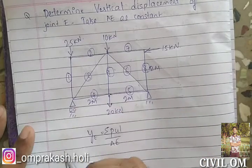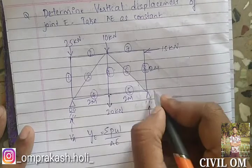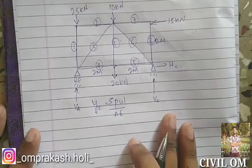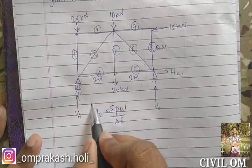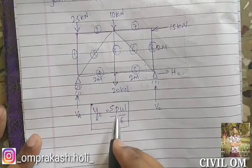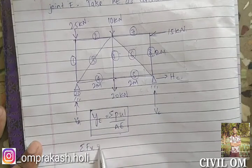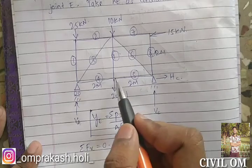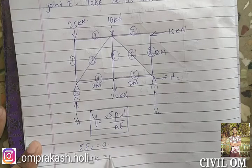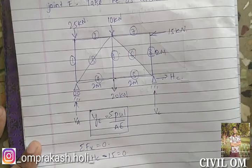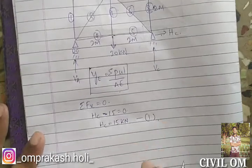Since we have a roller support here, we have reactions VA and VC, and here we have HC since it is a fixed support with two support reactions. The formula we use is YE equal to summation of PUL upon AE. Considering summation of FX equal to 0, we get HC minus 15 equal to 0, so HC is equal to 15 kilonewton.